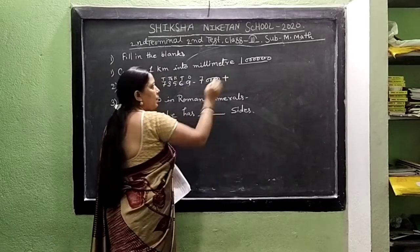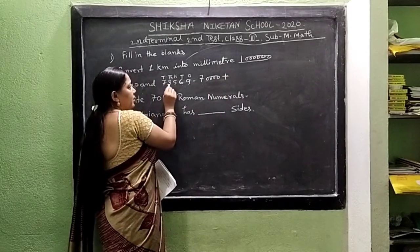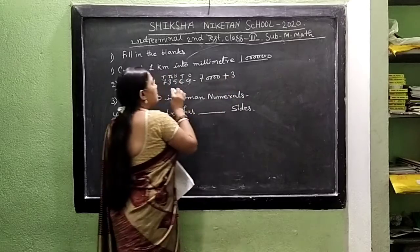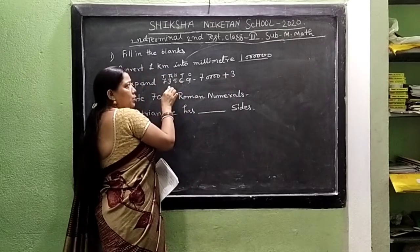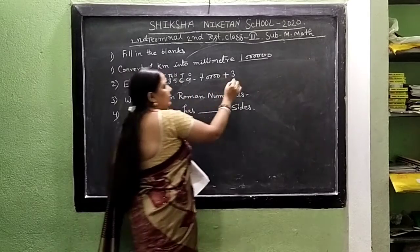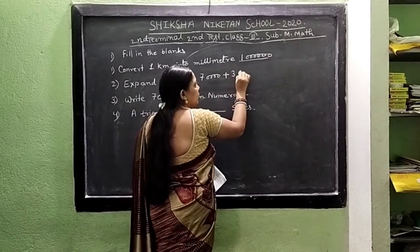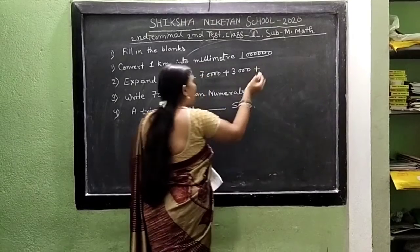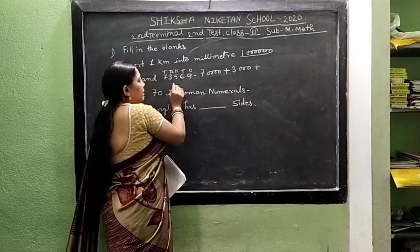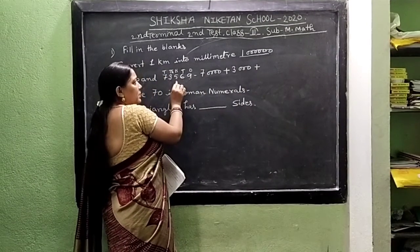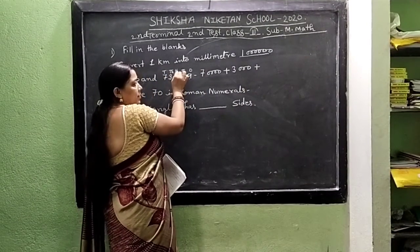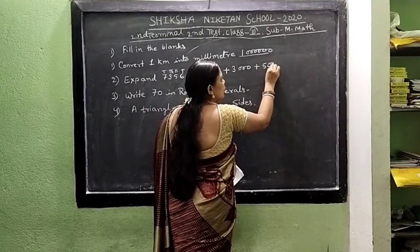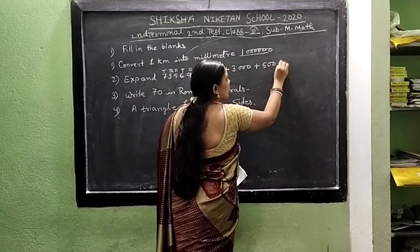Then we put the symbol of add. We write here 3. The 3 place value is 1,000. So we write here 3, 0. Put the symbol of add. Next is 5. The 5 place value is 100. We write here 5 and 2 zeros.